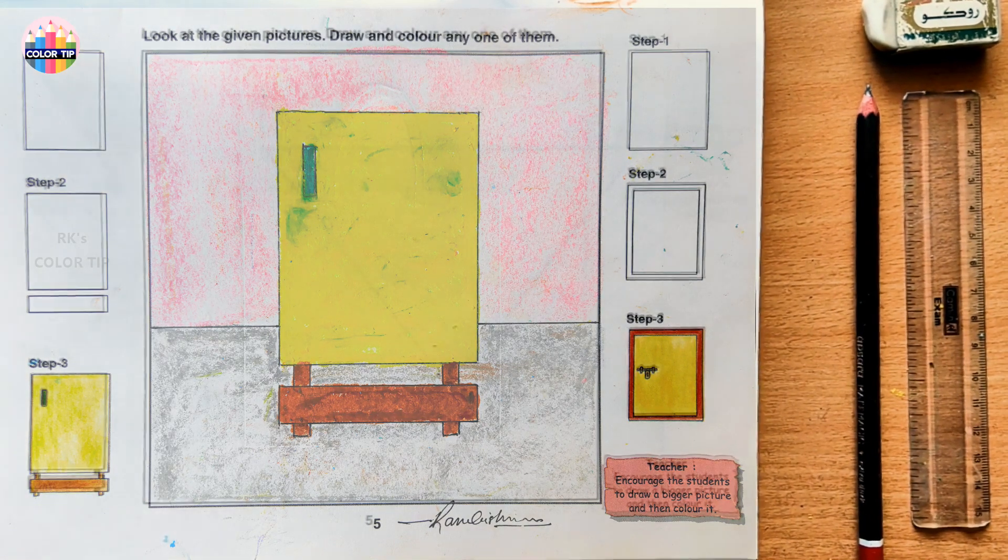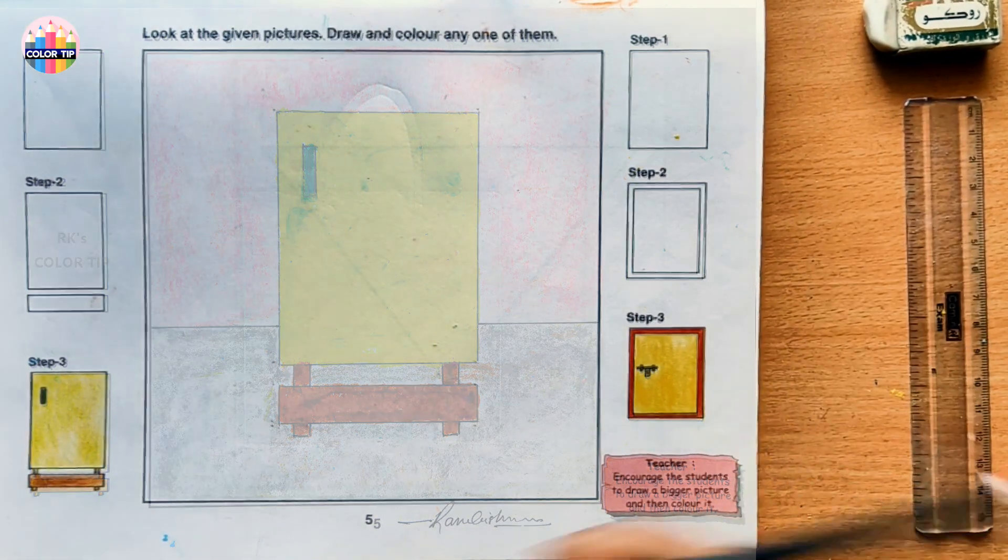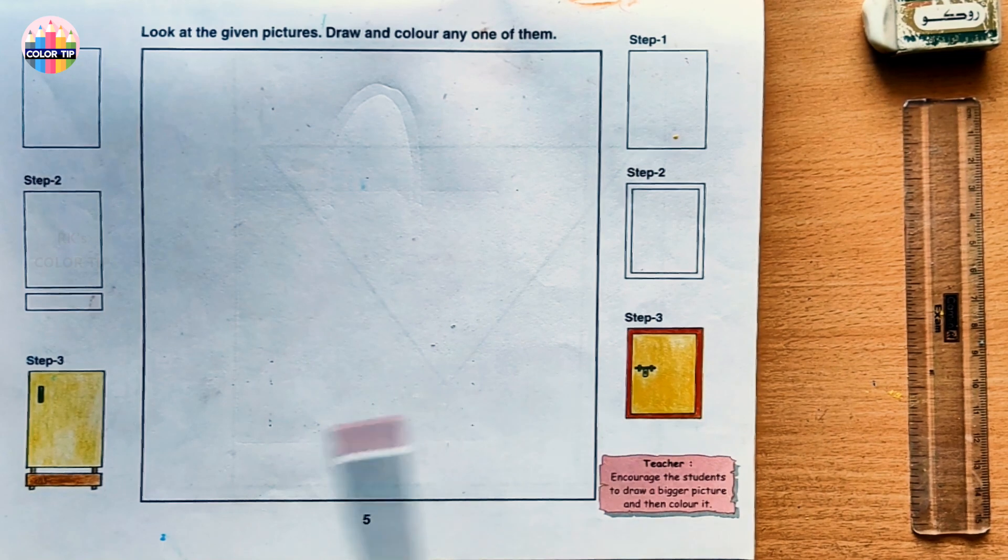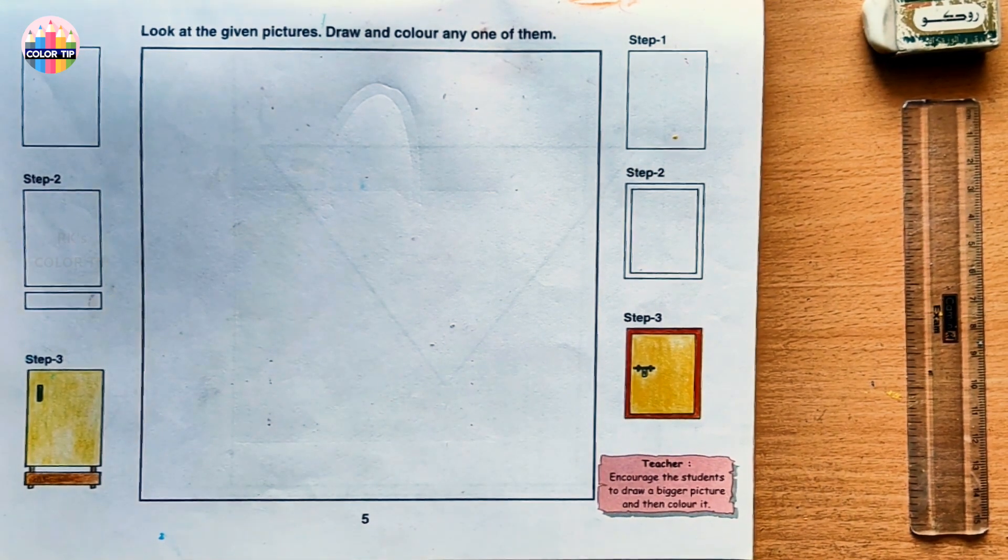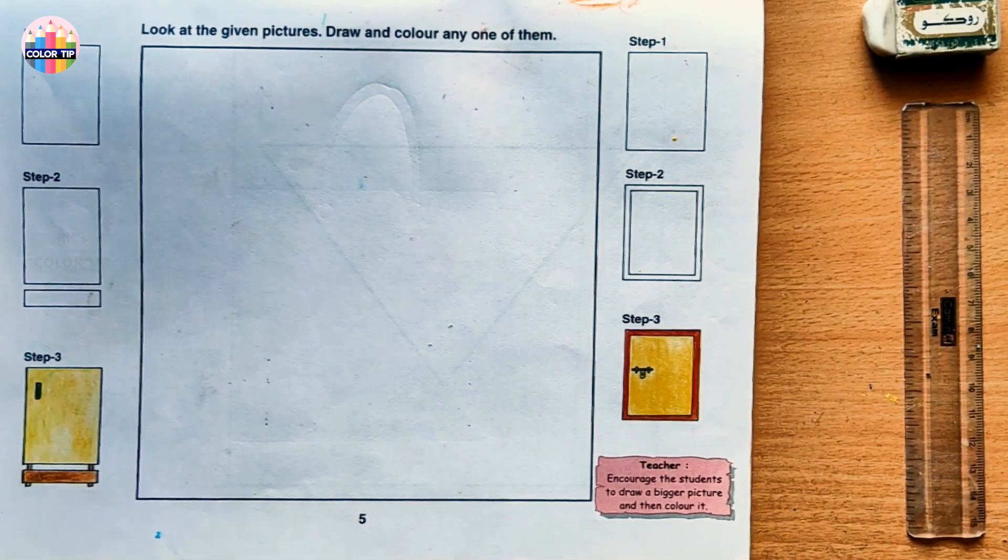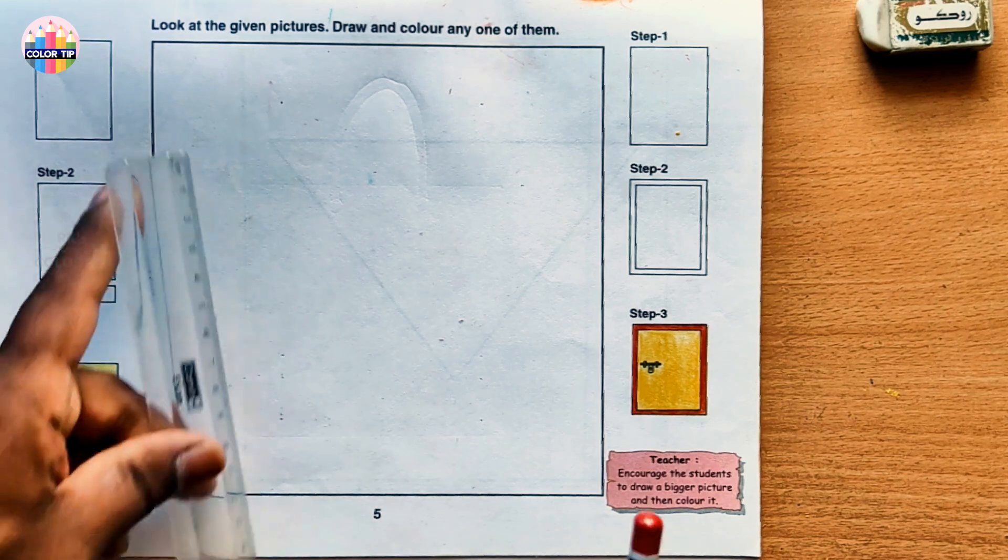Step by step, class 1, page number 5. Look at the given pictures, draw and color any one of these objects. Let us draw a fridge. Let's draw a rectangle, vertical one.